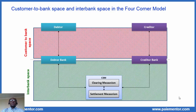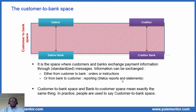On this picture, we see the customer to bank space and interbank space in the four-corner model. It is self-explanatory. Let's consider the customer to bank space first. The customer to bank space is the space where customers and banks exchange payment information through standardized messages in general. When information is sent from the customer to the bank, it's generally an order or an instruction. The customer may ask the bank to debit his account and credit many beneficiary accounts.